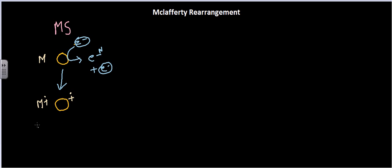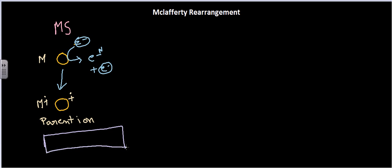This parent ion is generated in the source region of the mass spectrometer. If you look at the basic mass spectrometry videos on my YouTube channel, the mass spectrometer has three different parts: the source, the analyzer, and the detector. This hitting by an electron and the generation of the parent ion all occurs in the source region.